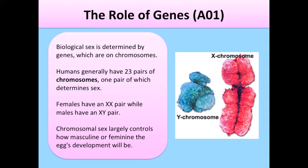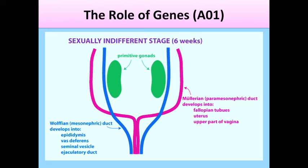Females have an XX pair while males have an XY pair. Chromosomal sex largely controls how masculine or feminine the embryo's development will be, and controls whether an embryo will develop ovaries or testes.